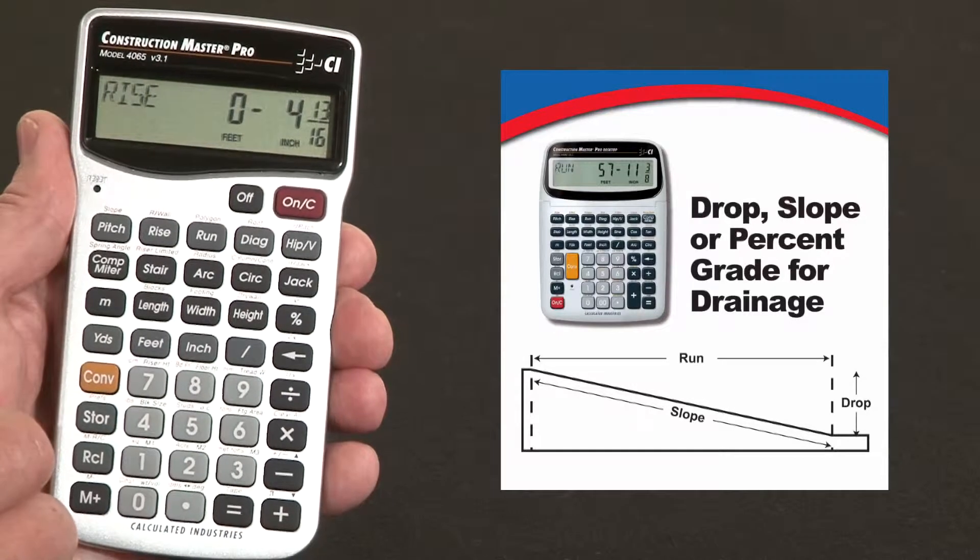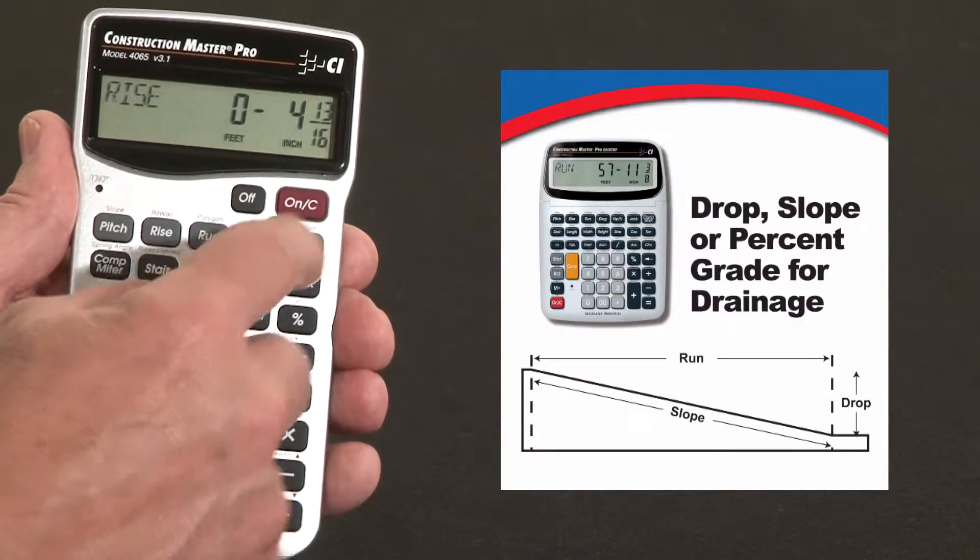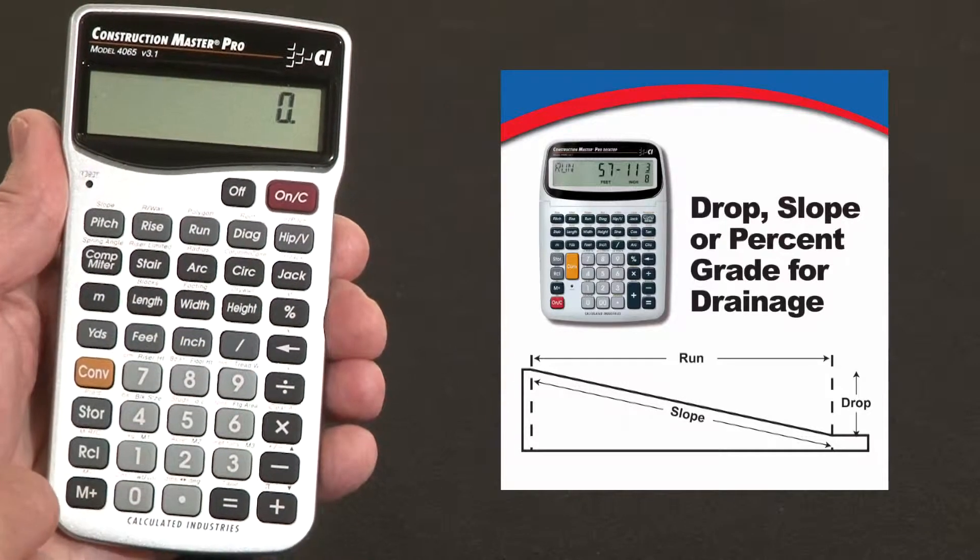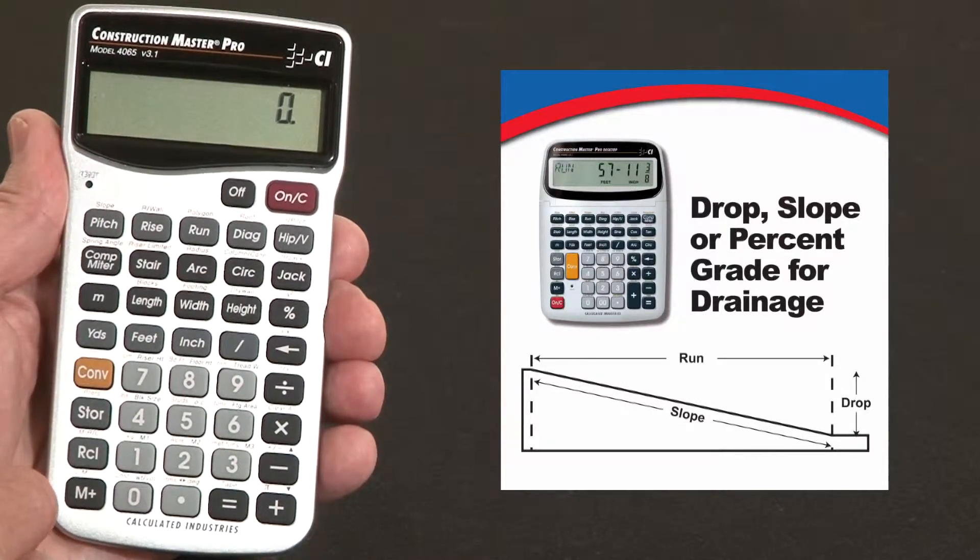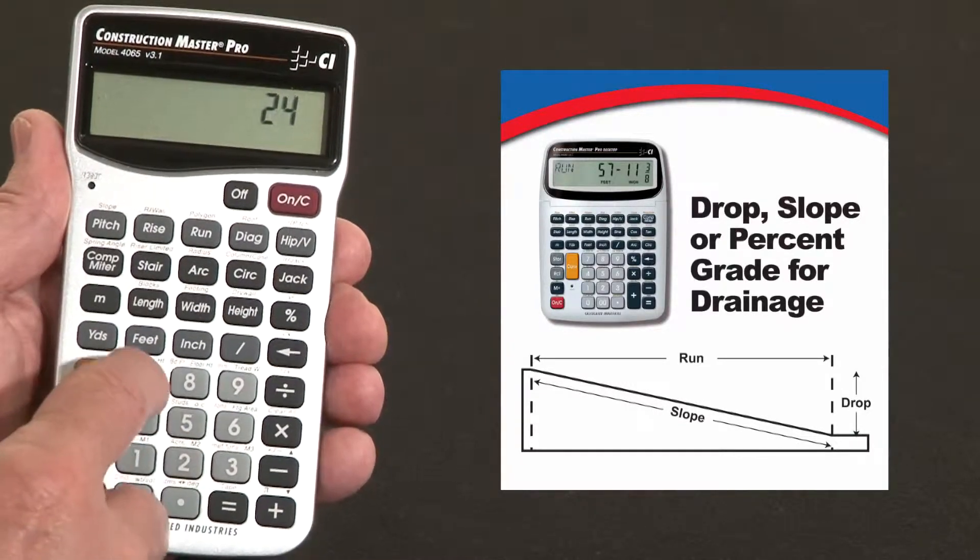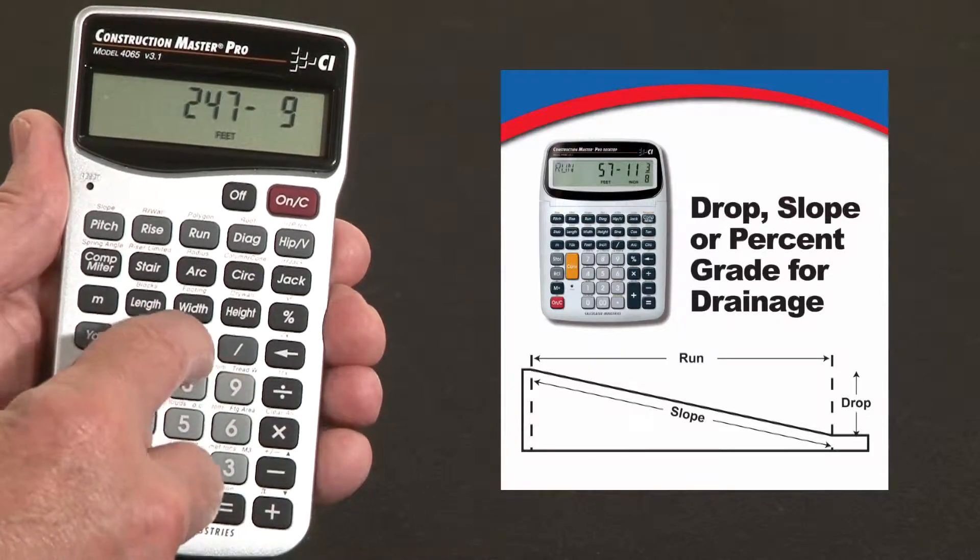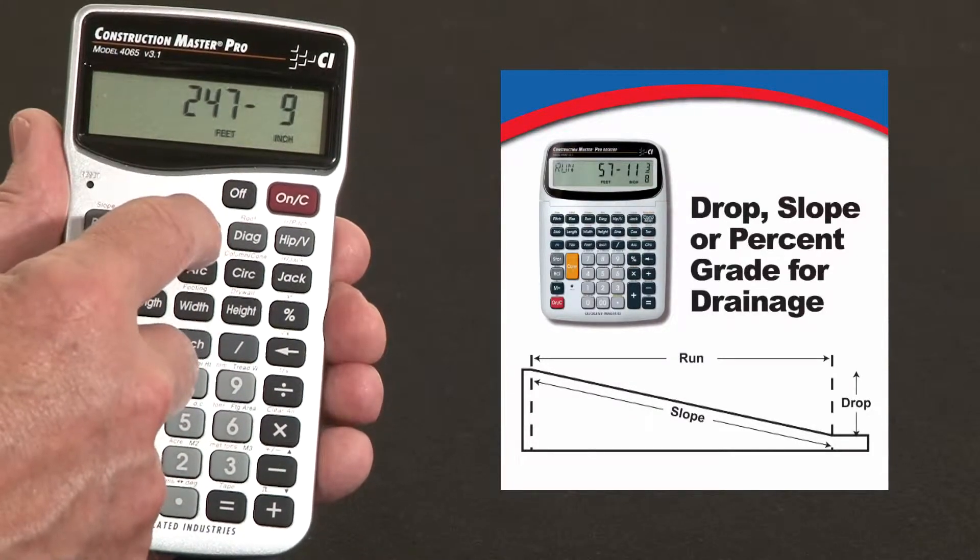Another situation. Maybe you want to determine the percent grade or the slope. You've got a lot and you want to find out if it'll drain properly the way it is contoured today. Say it's 247 feet 9 inches across. We'll call that the run.